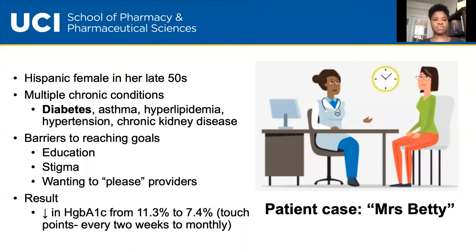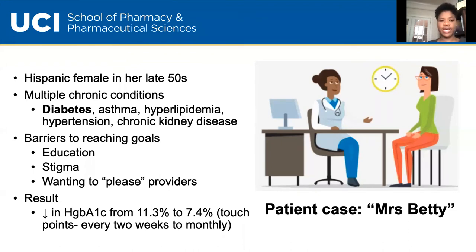The result was that Miss Betty's hemoglobin A1C went from 11.3% down to 7.4% over about eight to ten months after really getting to know her, doing house calls, and having her come in. Regarding the touch point literature, Calendrian et al. wrote an article discussing touch points and recommending being in contact with patients at least seven times out of twelve months per year. These seven times don't mean just in-person visits — they can include newsletters, phone call check-ins, emails, or follow-up on what was understood from the last visit. Critically, they do not need to come from a single provider, which is the key point: multiple touch points by multiple providers.